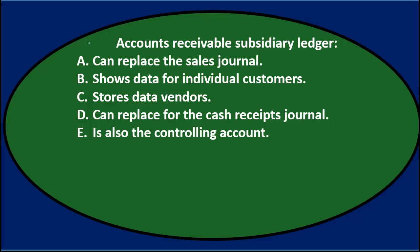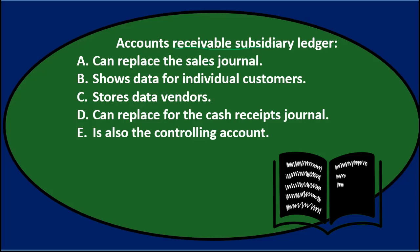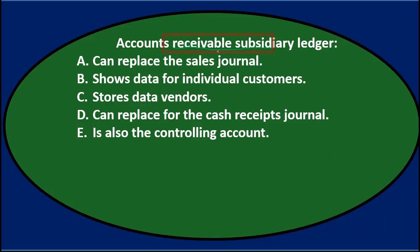Let's describe the accounts receivable subsidiary ledger first. The subsidiary ledger gives us more detail than the controlling account or general ledger. The general ledger lists accounts receivable information by date of transaction, while the subsidiary ledger lists information by who owes us money — that is, by individual customer. Option A says it can replace the sales journal — but they work together: the sales journal records transactions and posts them to both the subsidiary ledger and the general ledger, so we cross that out.